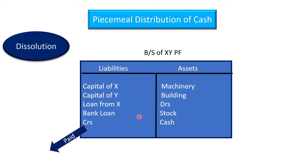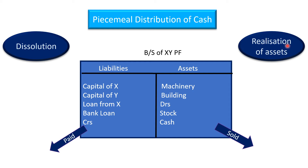The firm that is going to dissolve will pay the liabilities by selling its assets. The amount received will be utilized for making payment of those liabilities — that is the only option. Now, the firm will sell the assets and receive some money. This process of selling assets and receiving money is called realization of assets. In accounting terms, it means some amount is recovered by selling or disposing of the asset.